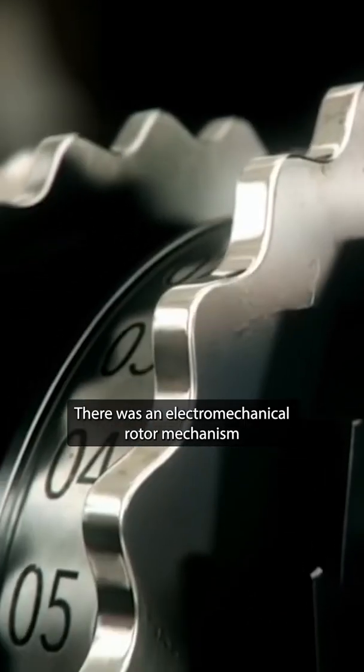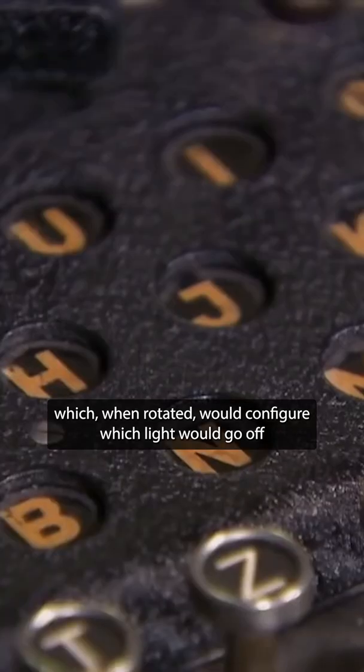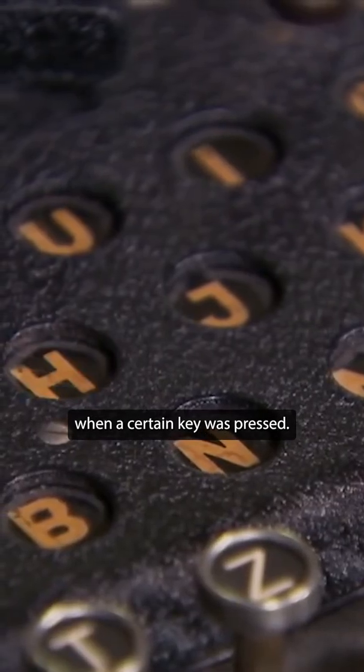There was an electromechanical rotor mechanism between the keyboard and the lights, which when rotated, would configure which light would go off when a certain key was pressed.